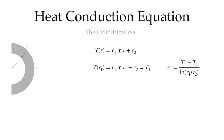Now that we've solved for c1, we can use either equation to solve for c2. Each gives a slightly different expression, but the same solution. Using our solution at T1, c2 = T1 - c1 ln(r1). Plugging c1 into this, we get an expression for temperature as a function of r.